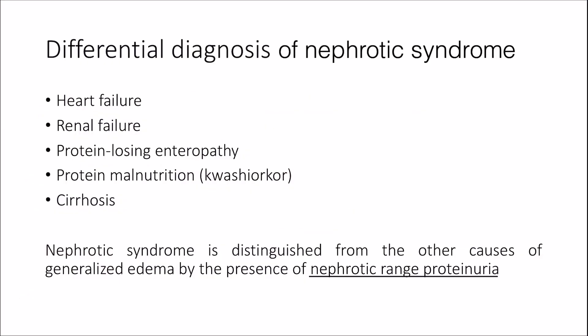Other causes of generalized edema include heart failure and renal failure. Diseases that may lead to hypoalbuminemia and generalized edema include protein-losing enteropathy, kwashiorkor, which is protein malnutrition — most commonly seen in poor countries where children have generalized edema and protruded bellies despite being malnourished — and finally liver cirrhosis. Nephrotic syndrome is distinguished from the other causes of generalized edema by the presence of nephrotic range proteinuria.